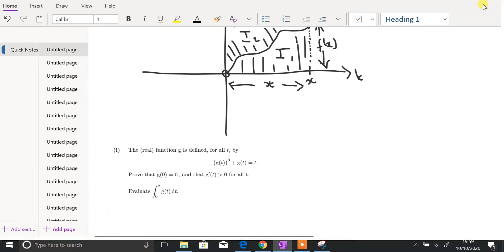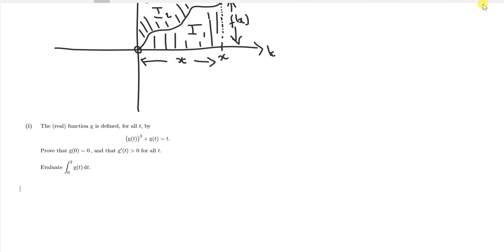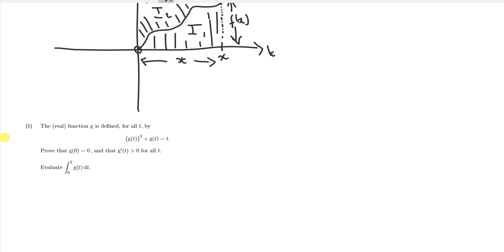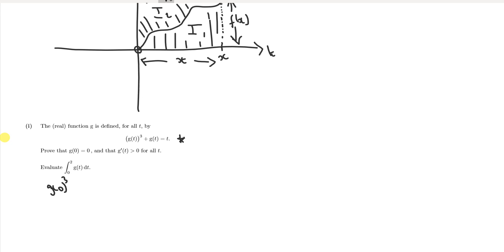Here we've got part one of question number two. The real function g is defined for all t by g(t) cubed plus g(t) equals t. First of all, we're saying prove that g(0) equals 0. I'm going to use this formula and write g(0) cubed plus g(0) equals 0 on the right-hand side. The best thing to do now is to take out a factor of g(0), giving g(0) times g(0) squared plus 1 equals 0.